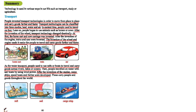Summary: Technology is used in various ways in our life, such as in the transport, study, and agriculture sectors. We know that in our personal life we are using technology in a variety of areas. From here we will learn about the transport sector, the study sector, and the agricultural sector — how technology is being used in each of these areas.